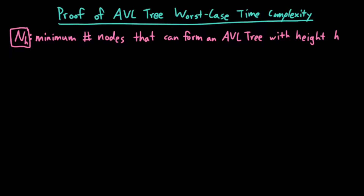I said that the worst case time complexity to find an element in an AVL tree is O(log n), but we need to actually prove this. To start our proof, let's define n sub h to denote the minimum number of nodes that can form an AVL tree with height h.